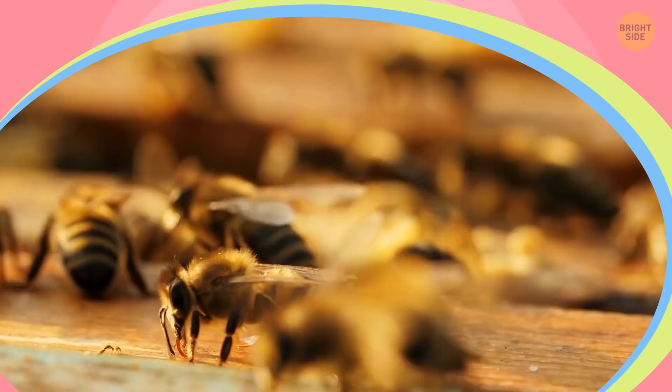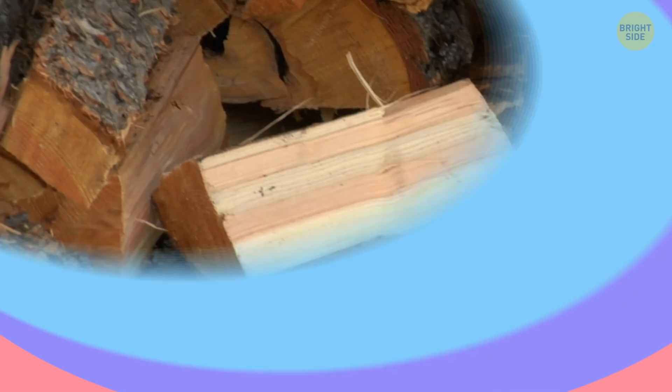Unfinished wood. Carpenter bees love unfinished wood, especially if it has holes in it. They drill into the wood and lay eggs there.